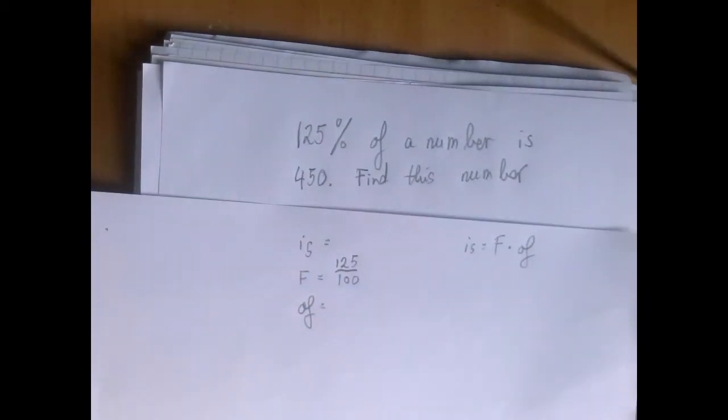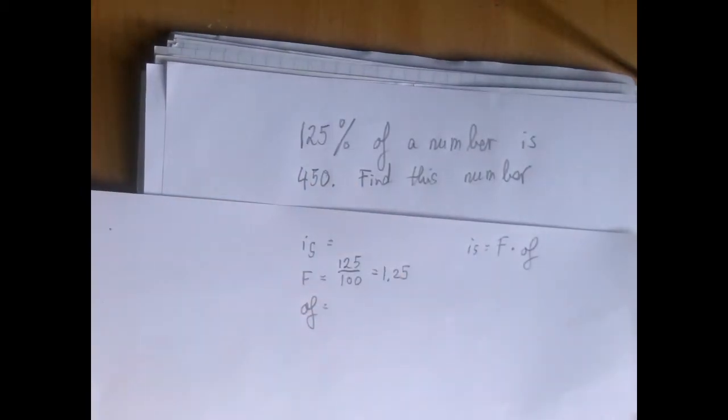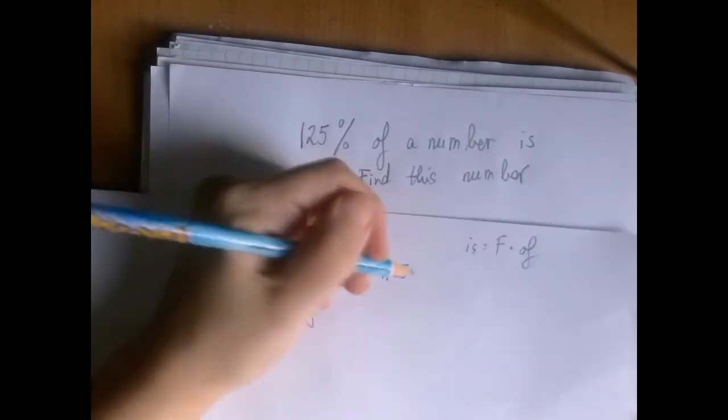Depending on where you are in algebra, you can handle this number differently. We can rewrite it as a decimal. It would be 1.25. Or we can use it as a reduced fraction, which would be, if we divide both upstairs and downstairs by 25, it would be 5 over 4.